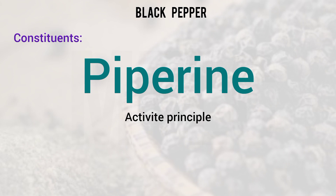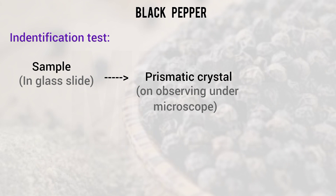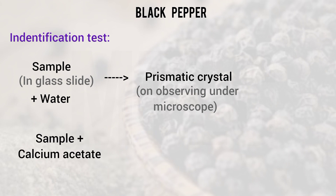The important constituent is piperine. To identify it, add black pepper powder on a glass slide, cover with a coverslip, and add a drop of water. Long needle-shaped prismatic crystals will appear. In the chemical test, add black pepper powder to calcium acetate and mix with hydrochloric acid — yellow color needle crystals will separate out.